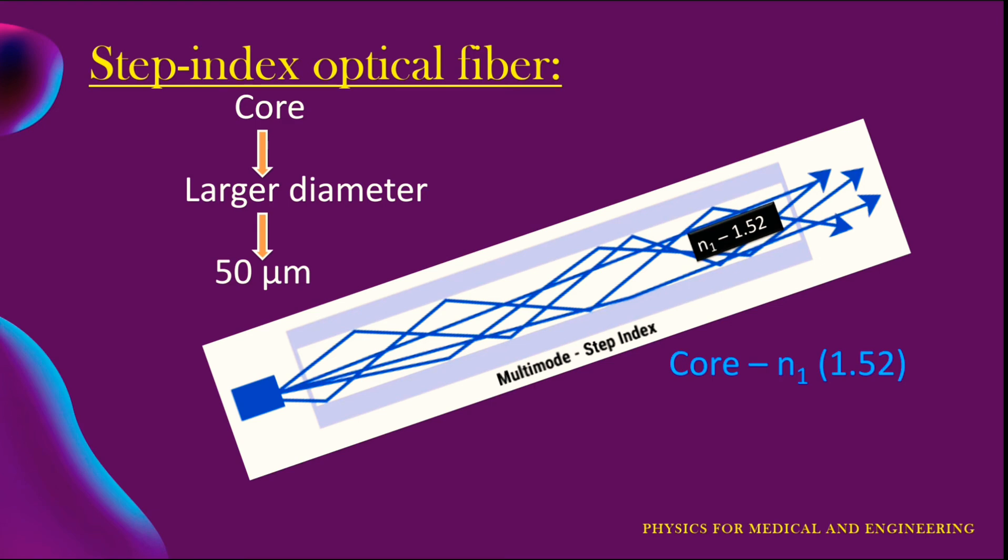The refractive index then changes to a lower value n2 such as 1.48 which remains constant throughout the cladding. This is called step index multi-mode fiber because the refractive index steps down from 1.52 to 1.48 at the boundary with the cladding.